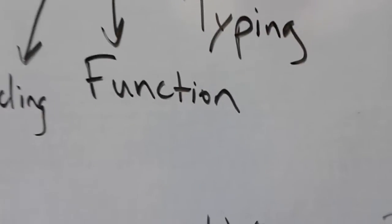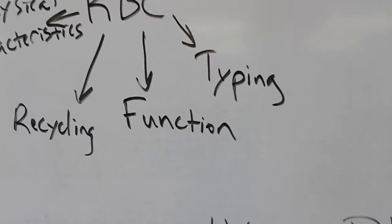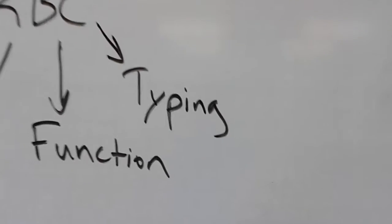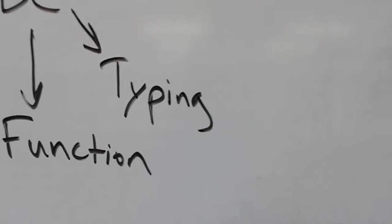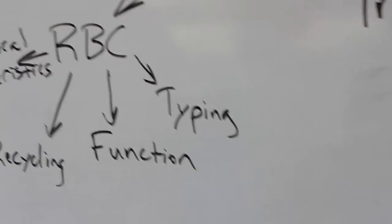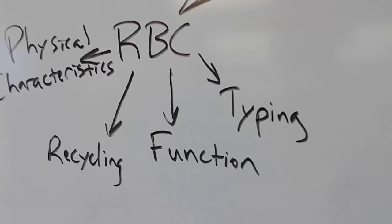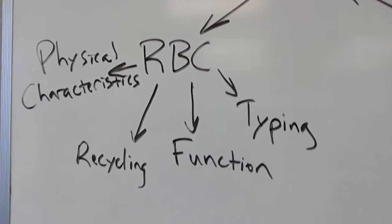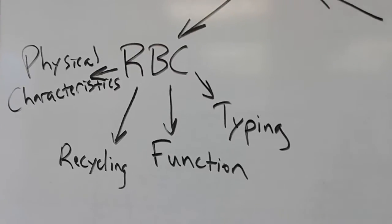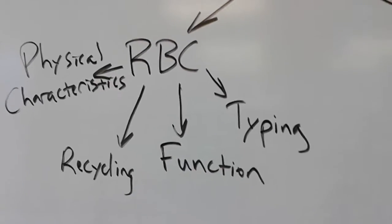The function of red blood cells primarily carry gases, carry oxygen and carbon dioxide, and blood typing. Oh, this one gets people a lot. One thing you got to remember about blood typing is that there are two reasons why we call a blood type what we do.